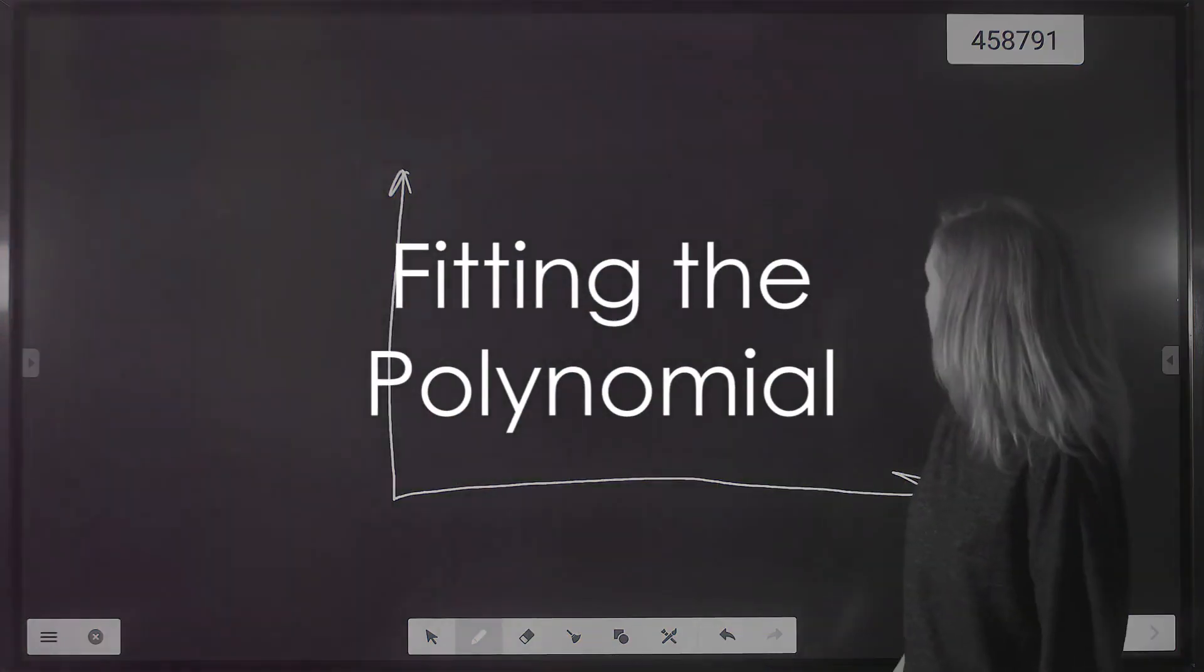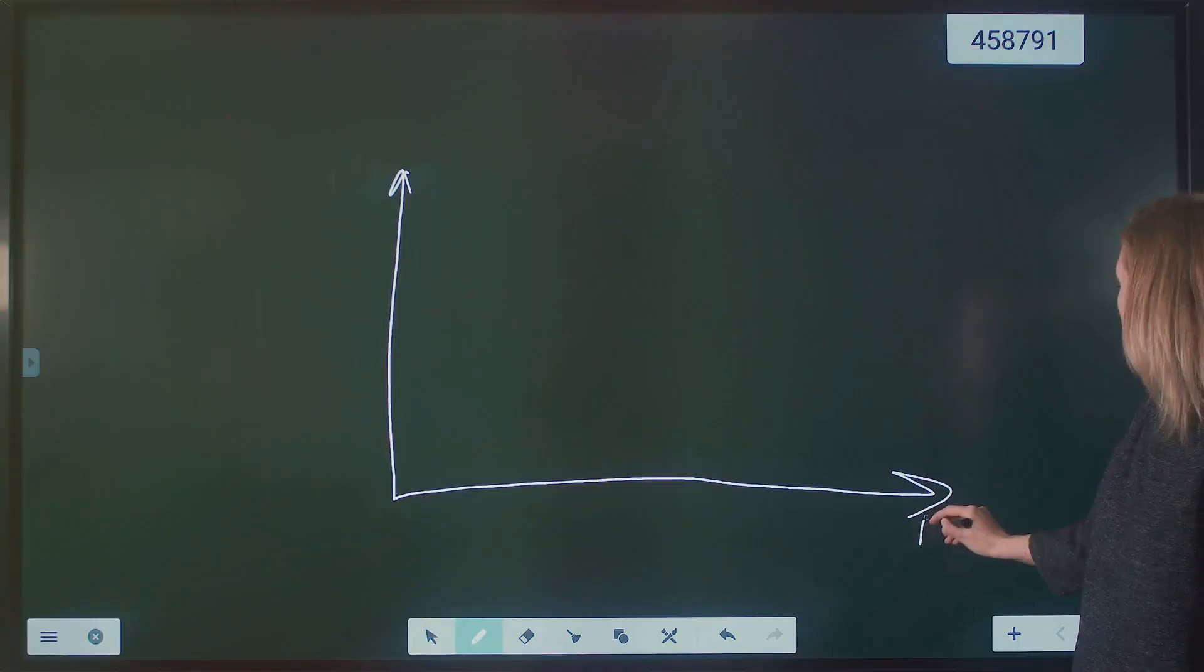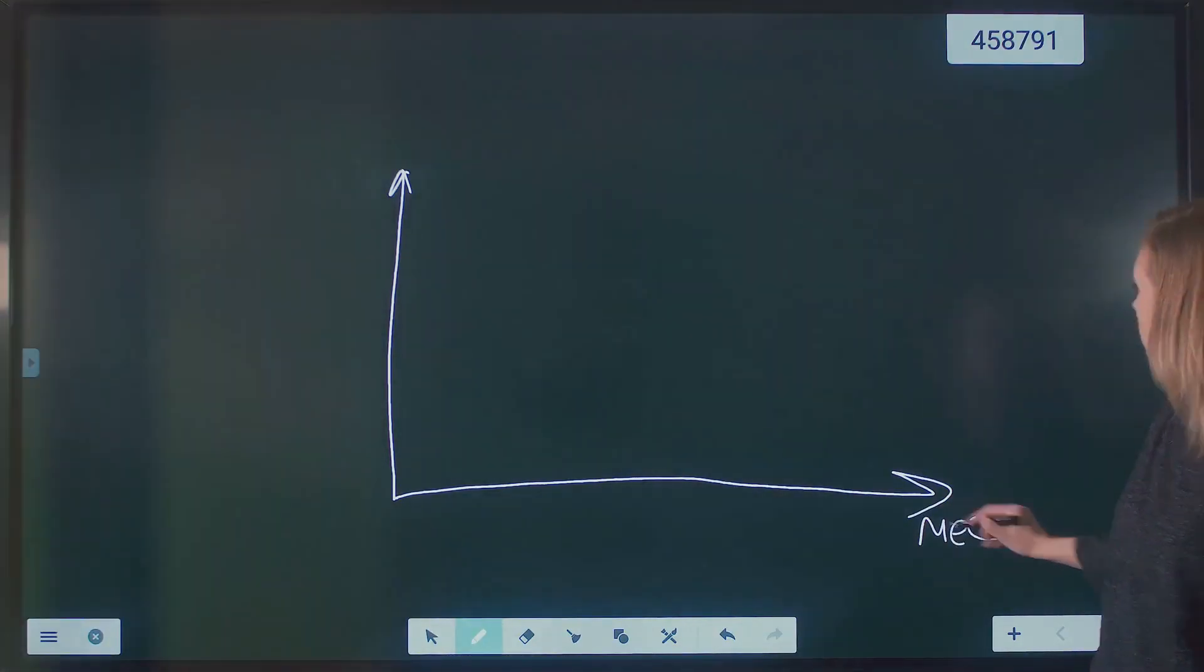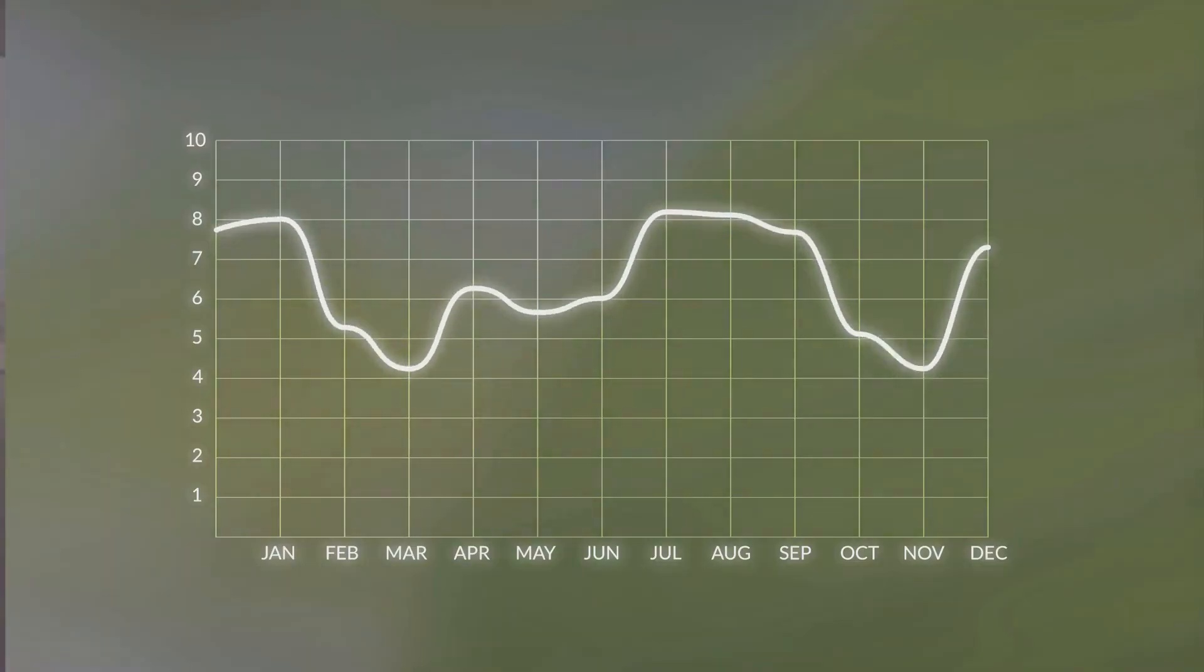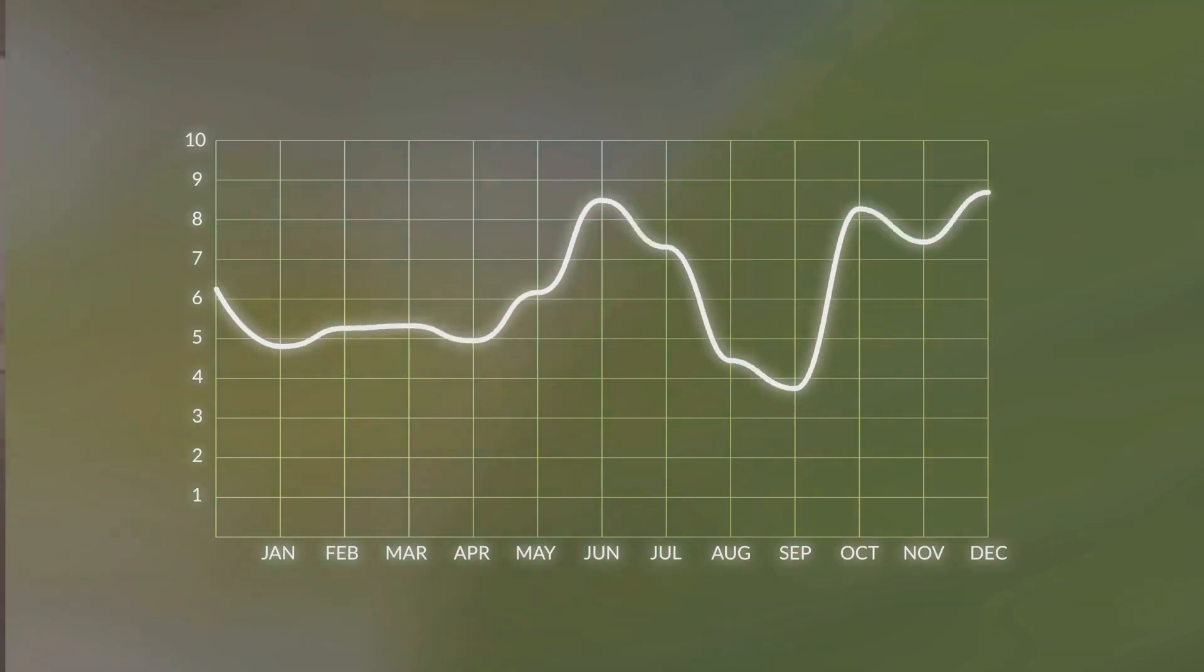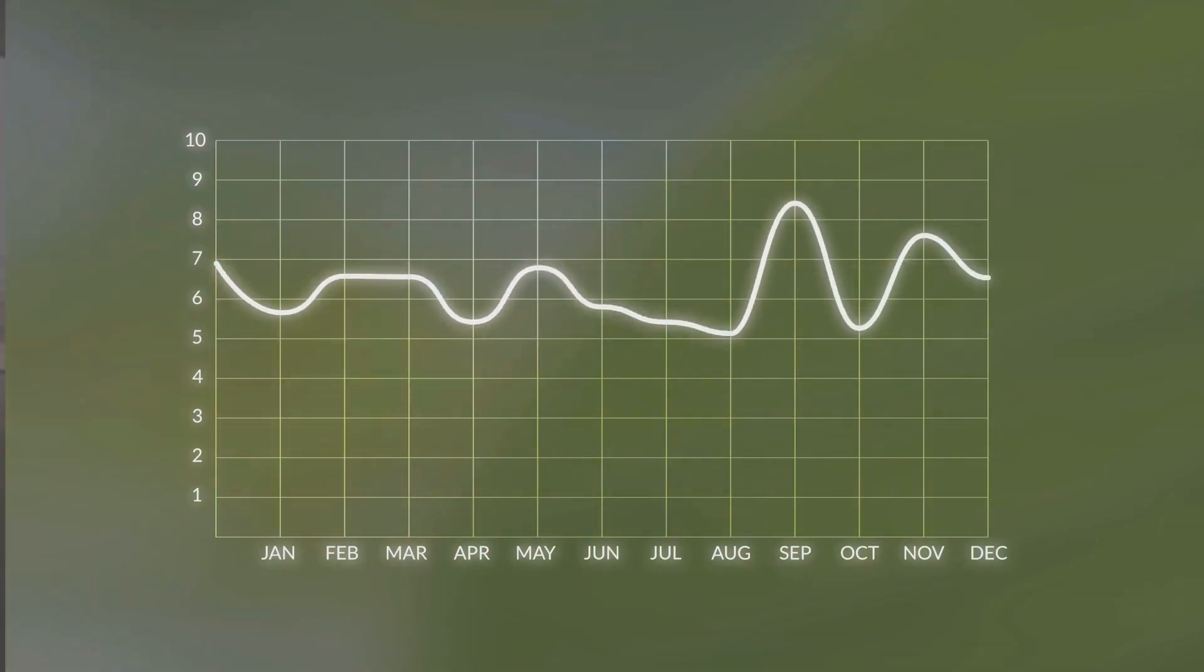Then, LOESS fits a low-degree polynomial to each subset of data using weighted least squares, giving us a set of fitted values. This process is repeated for each data point in the dataset, resulting in a smooth curve that captures the local trends in the data.